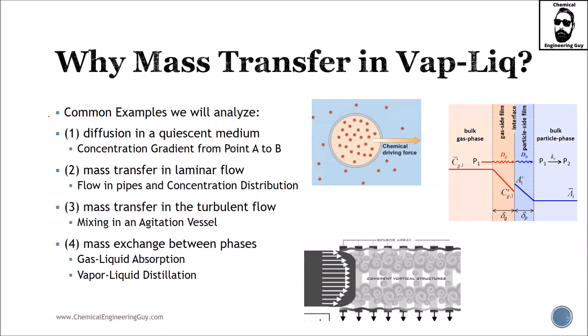It will be hard to understand all types of mass transfer, but the most common examples we are going to study are: Number one, diffusion in a quiescent medium - this means stagnant or static medium - where the concentration gradient goes from A to B.